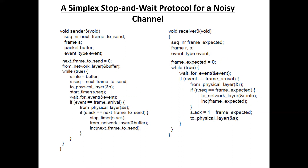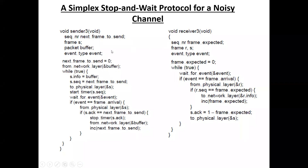The third protocol is the simplex stop-and-wait protocol for a noisy channel. The difference from the first two protocols is that in this third protocol there are errors in the data. In the first two protocols there are no errors. To handle errors, we assign a sequence number to each frame. If there is any error in a frame, we retransmit that frame using its sequence number.